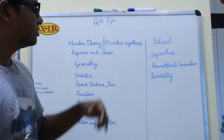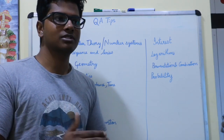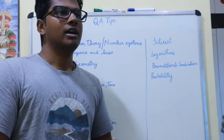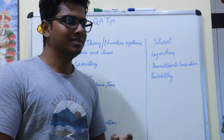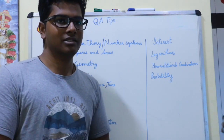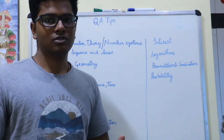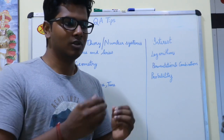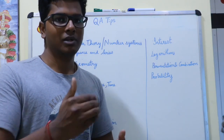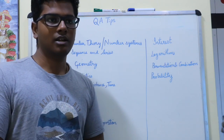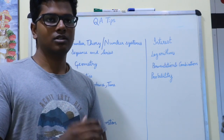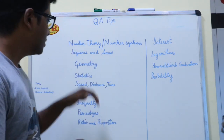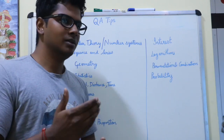The second topic is sequences and series — basically the progressions: arithmetic progression, geometric progression, and harmonic progression. For series, they give you an infinite series of numbers and ask you to find the sum. For example, they might give you 1/2 + 1/3 + 1/4 + ... and ask you to find what the sum equals.